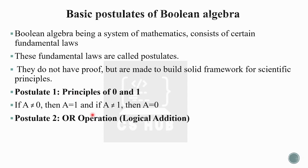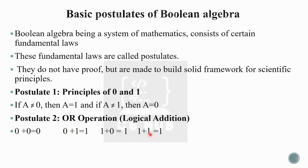The second postulate covers logical addition — the OR operation. The rules are: 0 plus 0 equals 0, 0 plus 1 equals 1, 1 plus 0 equals 1, and 1 plus 1 equals 1. Note that in logical addition, 1 plus 1 equals 1, unlike decimal arithmetic where it would equal 2.